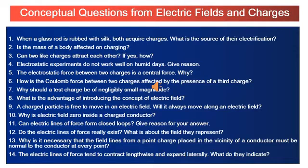When a glass rod is rubbed with silk, both acquire charges. The source of electrification: for the electrification of any body, only electrons are responsible. During rubbing, electrons are transferred from the glass rod to silk. So the glass rod acquires a positive charge and the silk acquires an equal amount of negative charge.